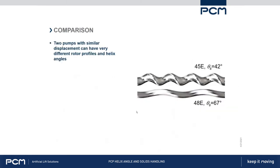Here's a quick comparison of two PCM pumps with very similar displacement — 45 versus 48 — but very different angles: 42 degrees versus 67 degrees. The rotor profiles look very different. The 45E has a very aggressive pitch. In a high solids application, that's the pump I'd recommend out of these two — that tighter, shorter pitch length and smaller angle is going to be better for pumping solids, and also for heavy oil.